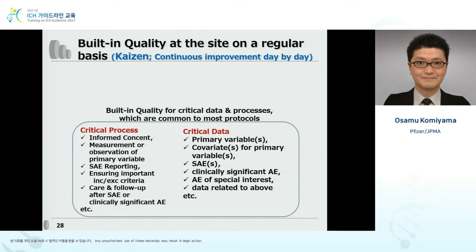There are things sites should be doing on a daily basis. It is too late to start identifying risks and considering preventive actions only after seeing the protocol — you may not be ready in time for first patient in. Haste may lead to inadequate risk identification and preventive actions. Sites must voluntarily build quality into their processes before they even look at a given protocol, because regardless of the protocol, there will always be important critical processes: informed consent, measuring primary variables, SAE reporting, ensuring eligibility criteria, follow-up after SAE or clinically significant adverse events, and critical data including primary variables, covariates, and information related to SAEs.